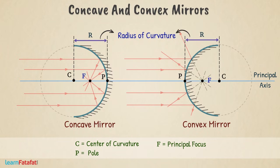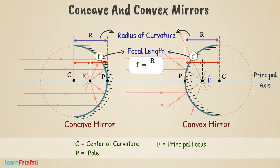And the distance between pole and the principal focus of the mirror is called focal length of mirror and is denoted by small f. The principal focus is midway between the centre of curvature and pole, which suggests that focal length is half of radius of curvature: f is equal to r divided by 2.